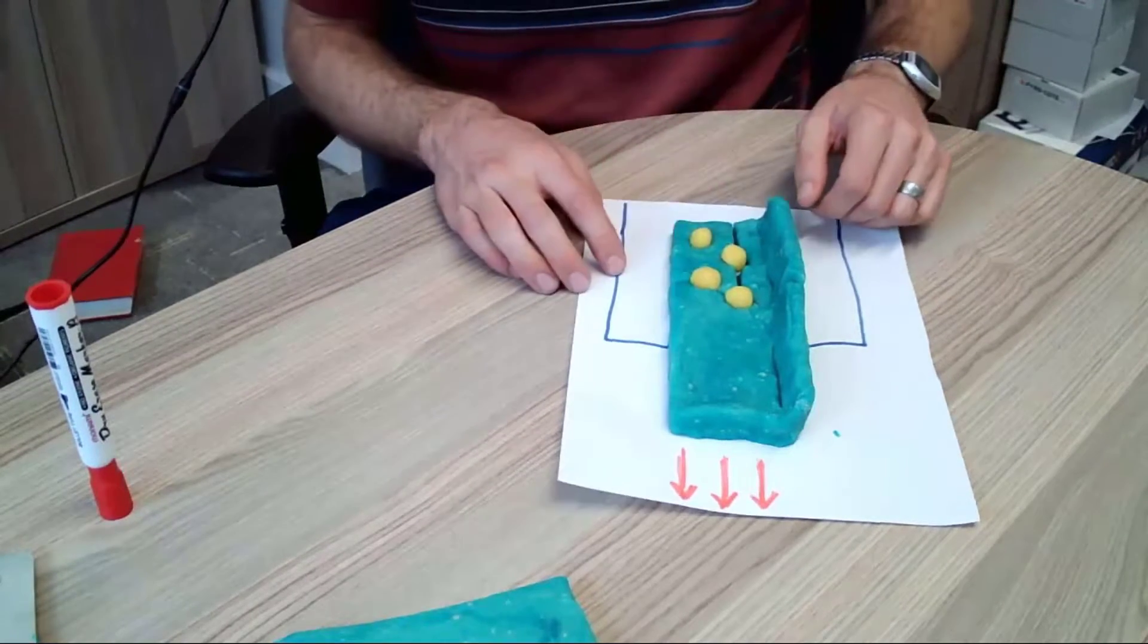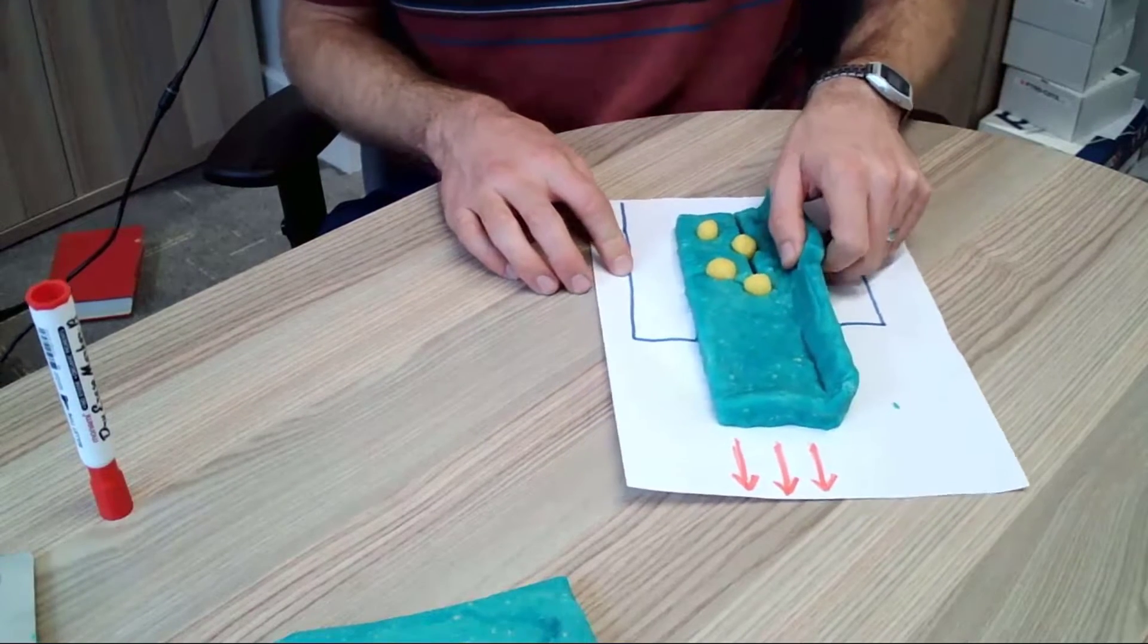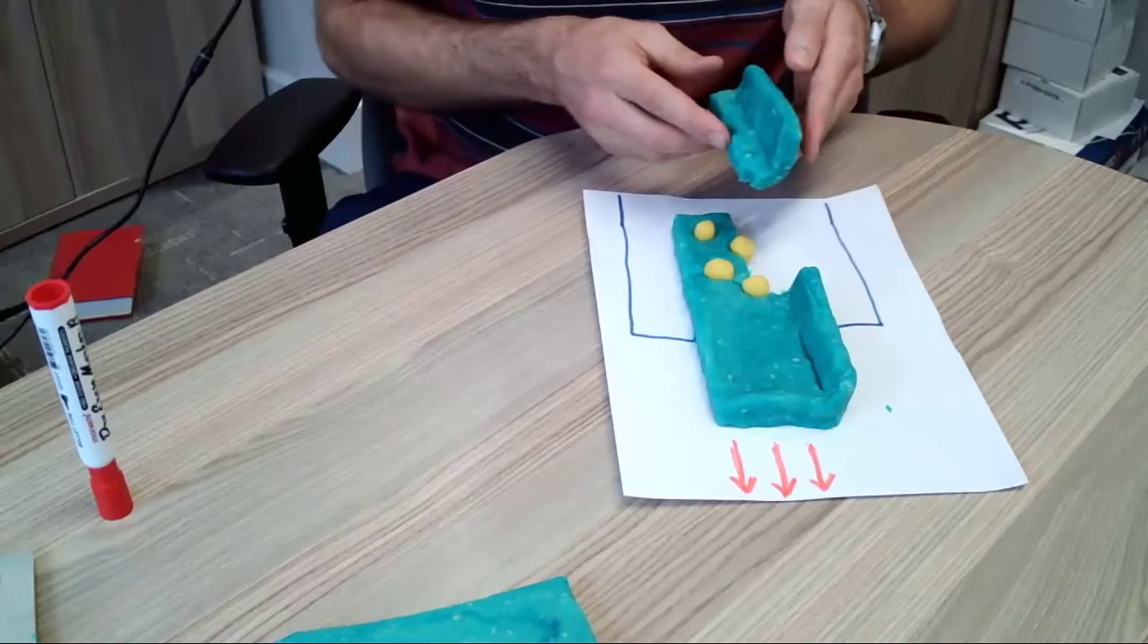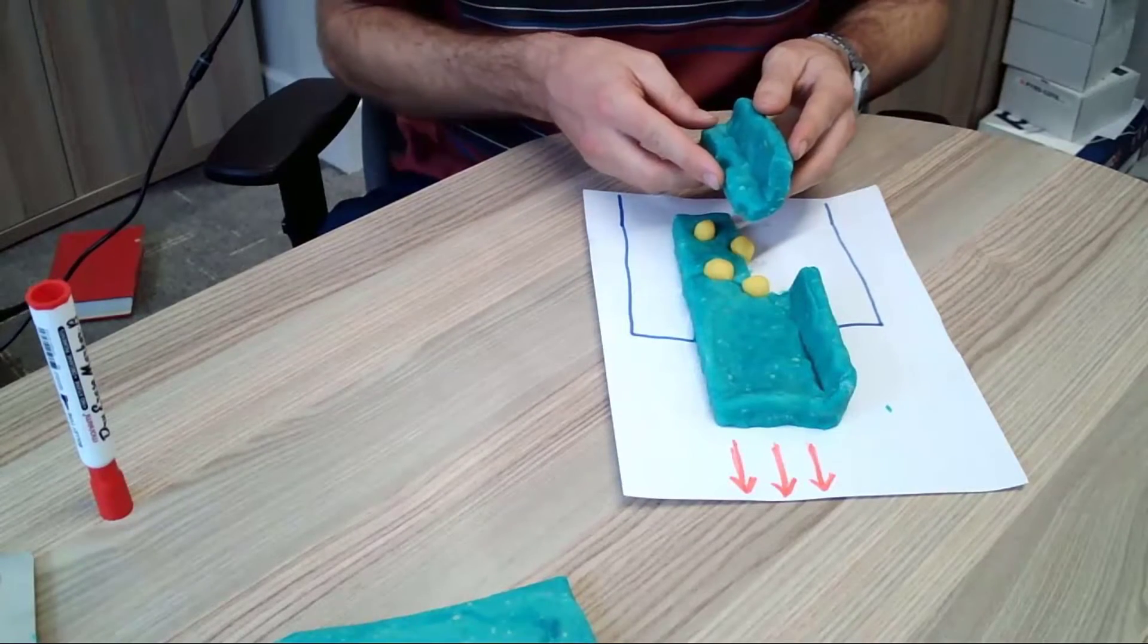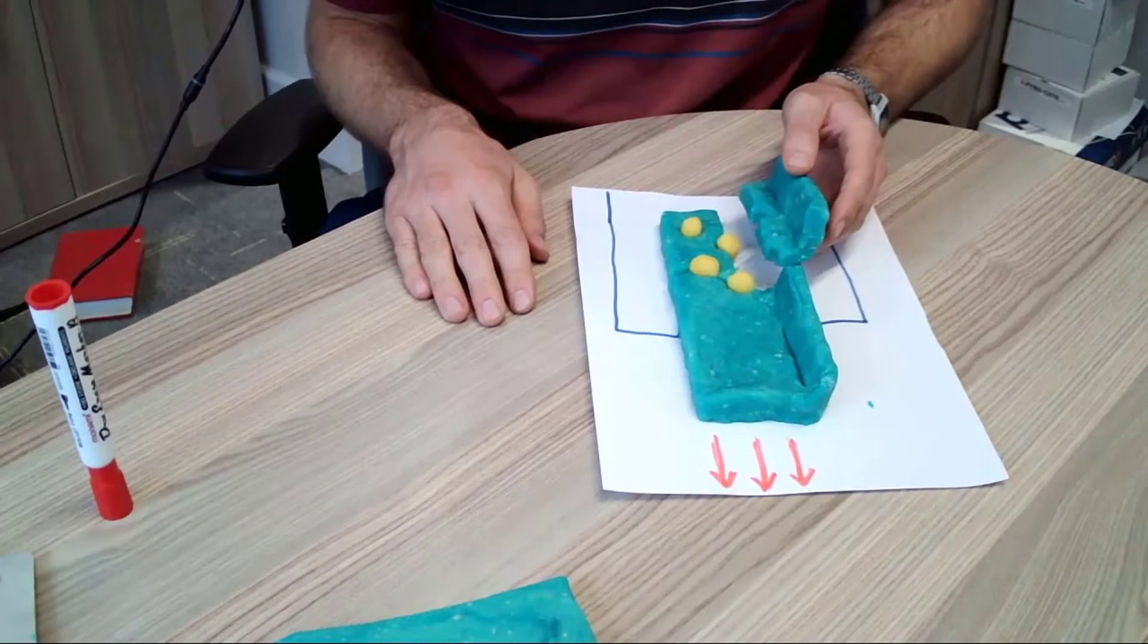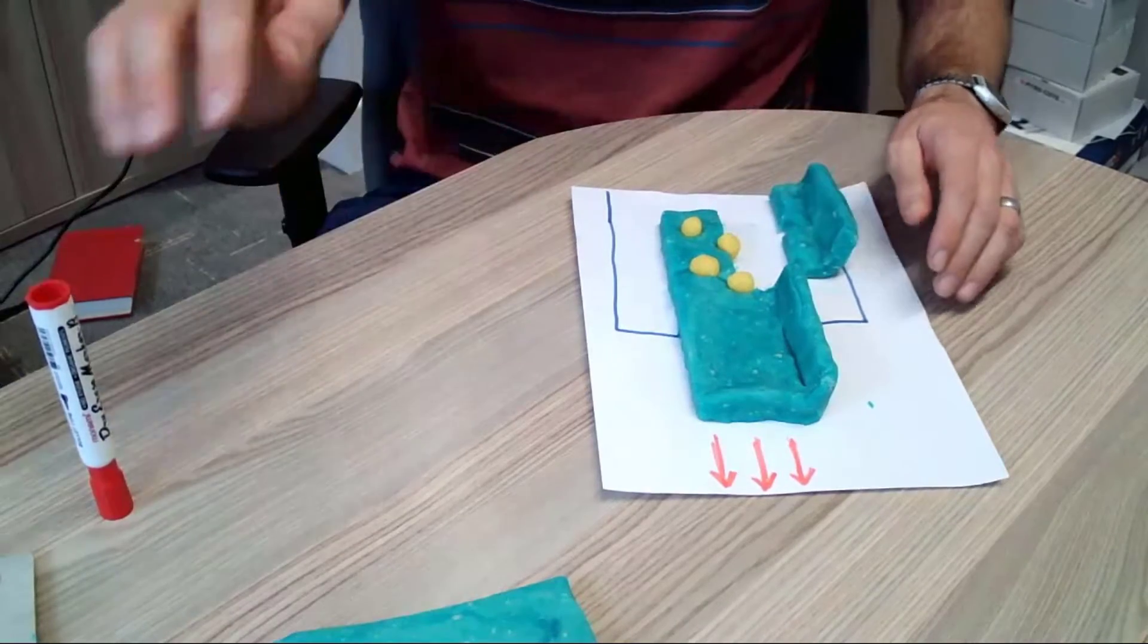And one thing that I've seen many times that students do, they will say that it will fail along a plane that looks like that. So basically this piece will break off and then you will pull this through. But at this point in time, when you look at that, you should start thinking, hold on, something's not right.